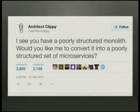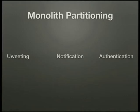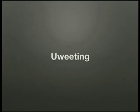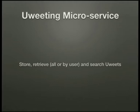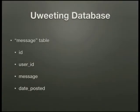So next we've got to take this monolith and somehow turn it into a set of microservices. We'll start by moving all the ueeting stuff into its own service. The ueeting microservice's one-sentence definition is that we need to store, retrieve, and search for ueets. It's pretty simple: we have a single database with a single message table storing the message ID, the user ID of whoever posted, the message content, and the date it was posted. This table is basically the same as in the monolith — we've just moved it into its own separate database.